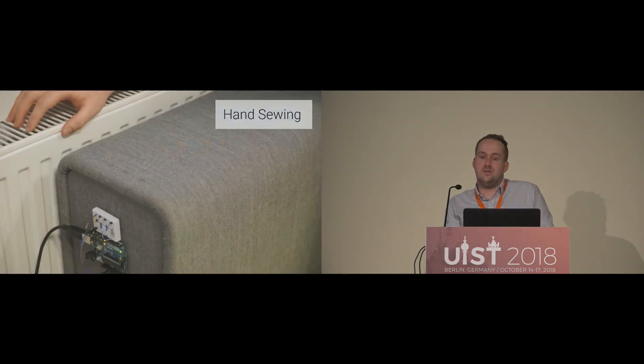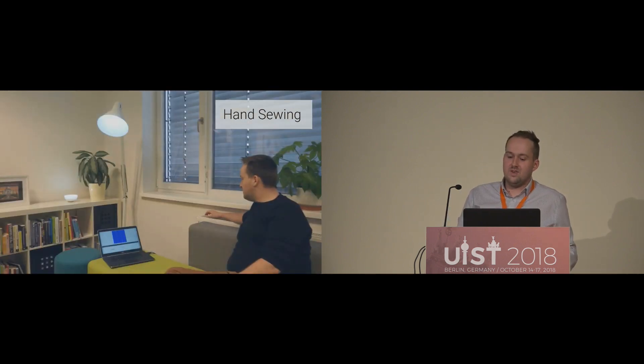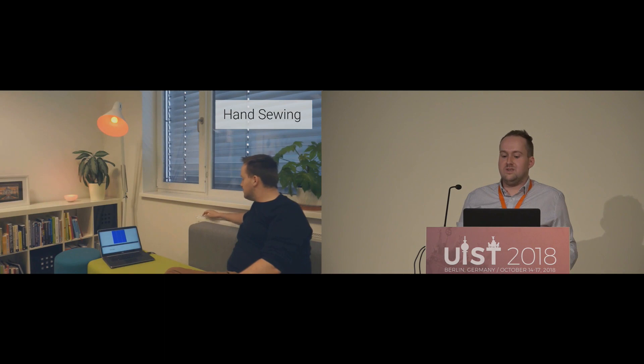Let's start with the additive manufacturing techniques. For hand sewing, we sewed three sensors into the armrest of a couch, which can detect simple gestures such as swipes or strong and slight touches. With this sewing interface, we are able to control the color and the brightness of a Hue lamp.